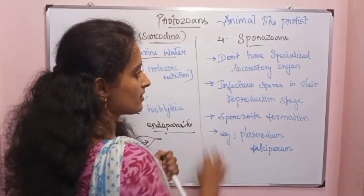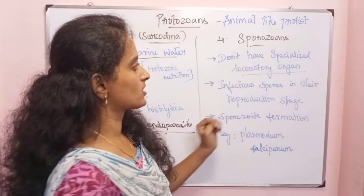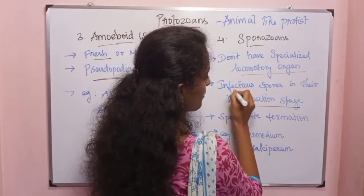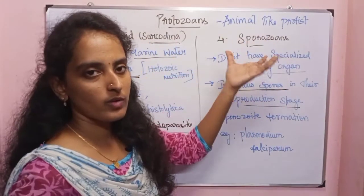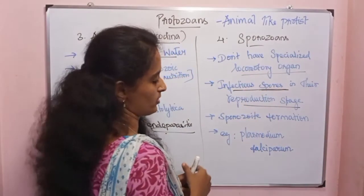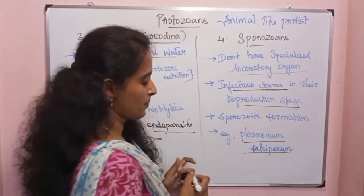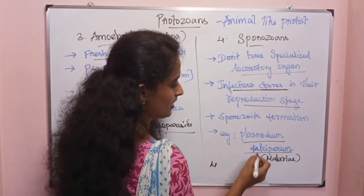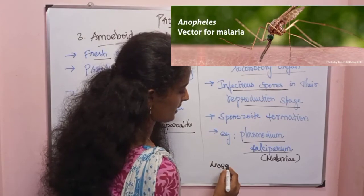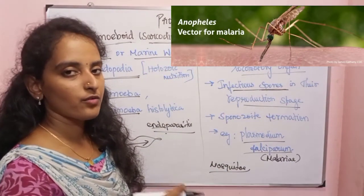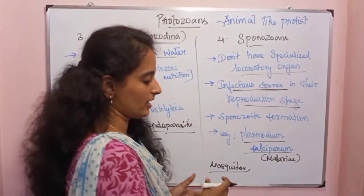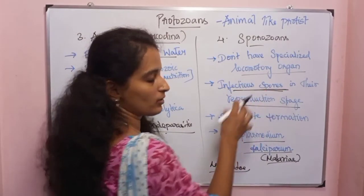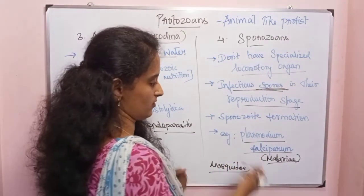Next are sporozoans. They have no specialised locomotory organ. In the reproduction stage, they produce infectious spores — that is why they are called sporozoans. An example is Plasmodium falciparum, which causes malaria. Malaria is transmitted by the female Anopheles mosquito, which acts as a vector or parasite carrier.